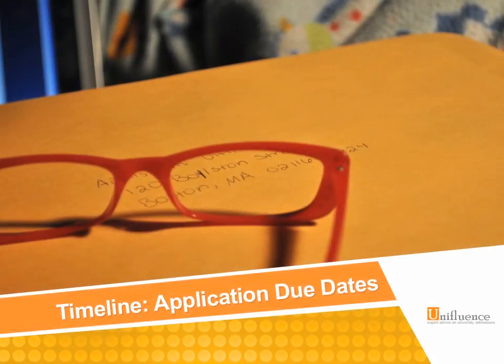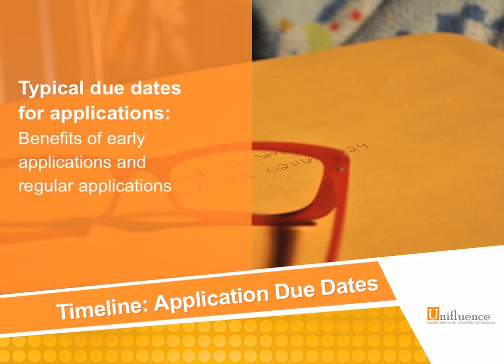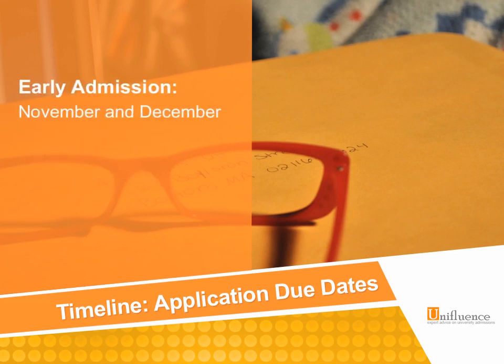One of the things we're going to talk about right now is the application due dates. If you're applying early, we're going to talk about the benefits of doing that, and if you're applying regular decision, we're going to talk about that too. This discussion really includes public and private schools, because typically private colleges are the ones that have the early admission process and also a regular admission process. Public schools tend to have just one admission date.